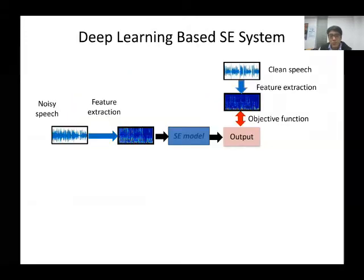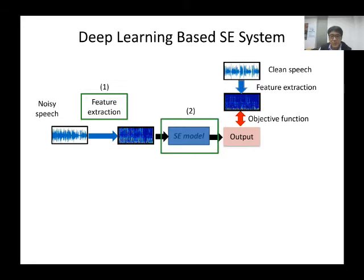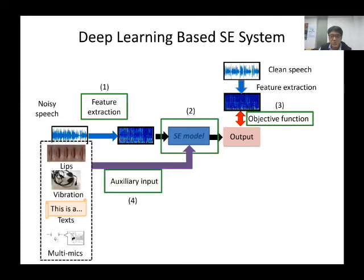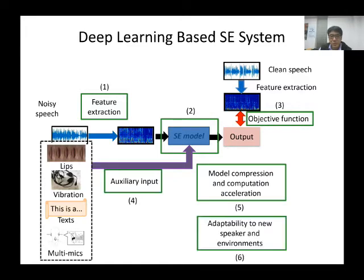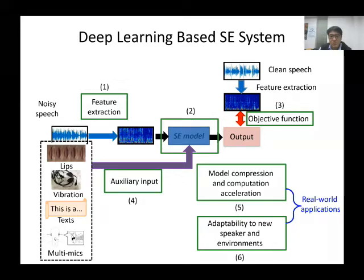To build a good deep learning-based speech enhancement system, we should consider the following six factors: feature extraction, speech enhancement models, objective functions, auxiliary input, ways to optimize the model architecture for real-world applications, and ways to increase the speech enhancement model's adaptability to new speakers and environments. The last two factors are very important to deploy the speech enhancement system in real-world applications.